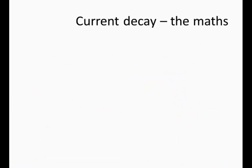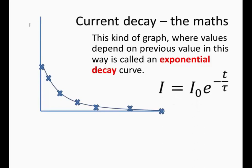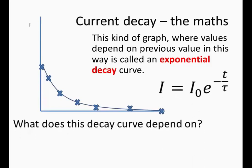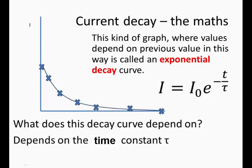Now let's look at the mathematics of this current decay. This is the graph we have just seen. This kind of graph, where values depend on the previous value and form this shape, is called an exponential decay curve. This is the equation we need to deal with. What does this decay curve depend on? It depends on the time constant, tau.